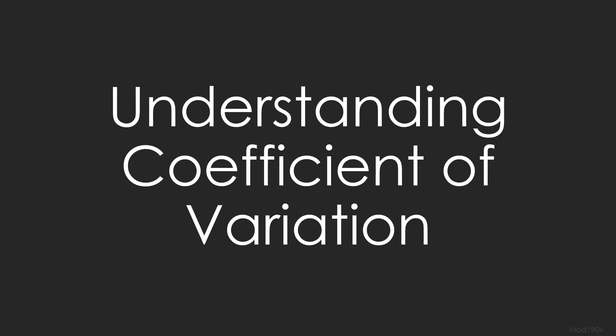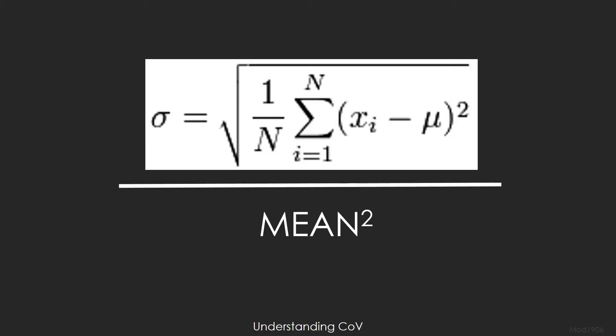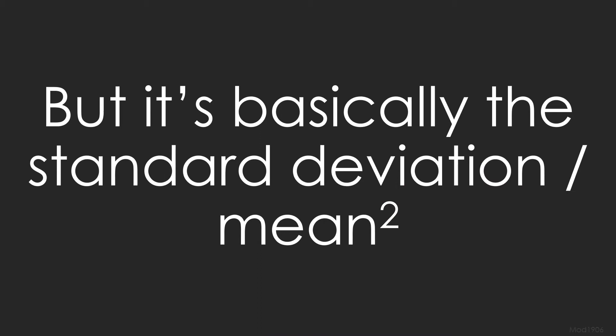Understanding Coefficient of Variation — here's the actual calculation. It's basically the standard deviation divided by the mean.